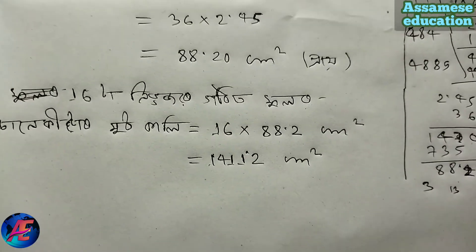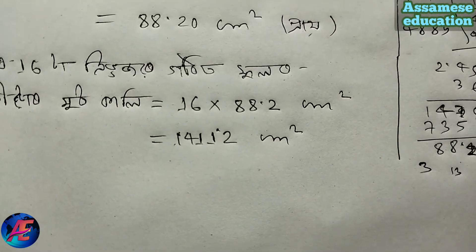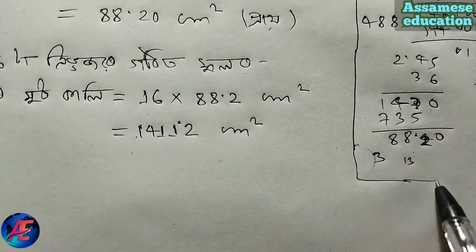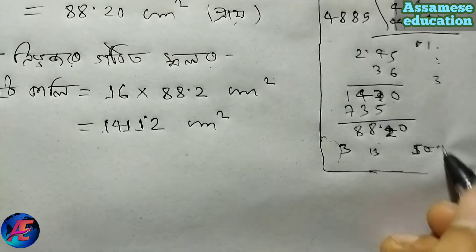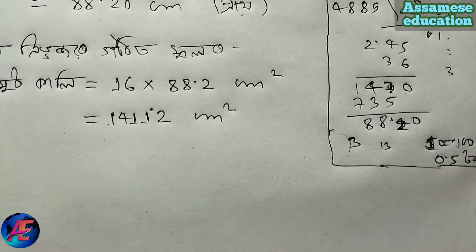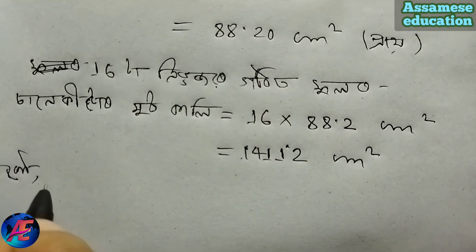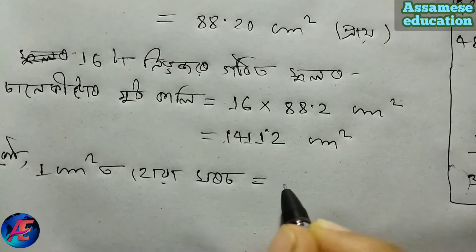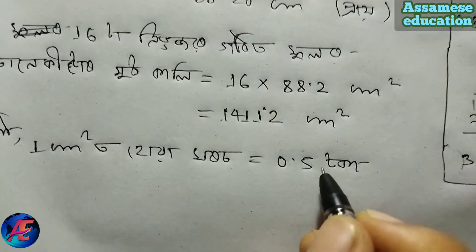So we have obtained the whole area. Now the question says: each tile is 15 paise. Write how many tiles are needed. We found the area is 141.2 cm². Each tile costs 15 paise. In the book it says 15 paise equals 0.50 toka. So write 0.50 toka.